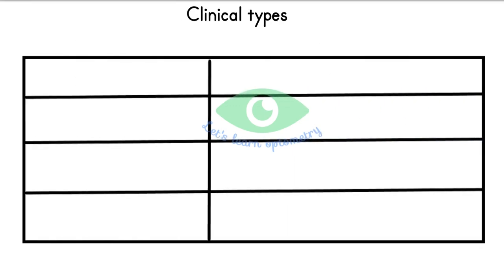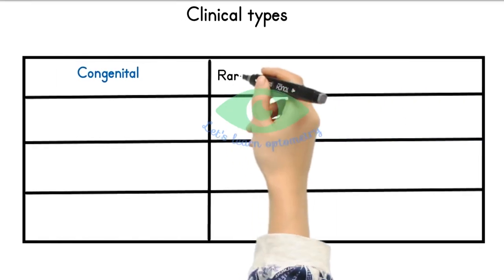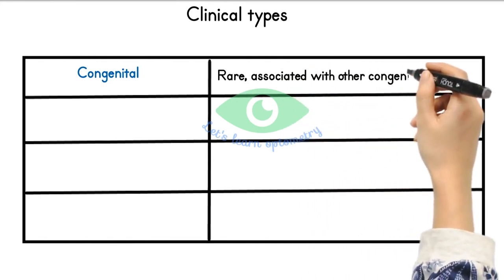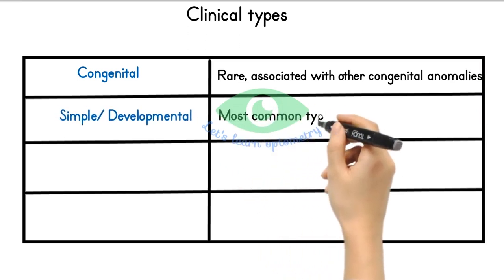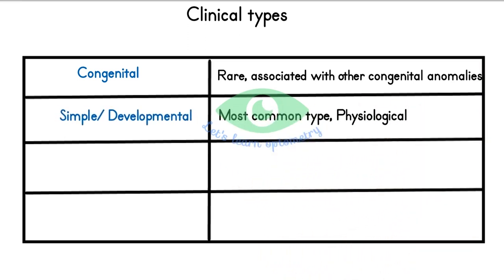Clinical types: Congenital hypermetropia is rare and usually associated with other anomalies like microphthalmia. Simple or developmental type is most common. As discussed, a newborn may be hypermetropic, but with age the eyeball grows and hypermetropia diminishes. If growth is retarded, hypermetropia persists.